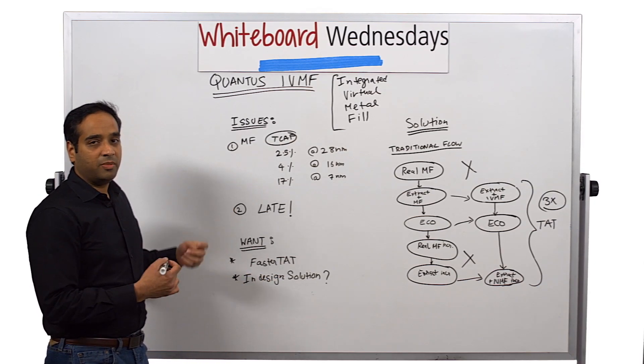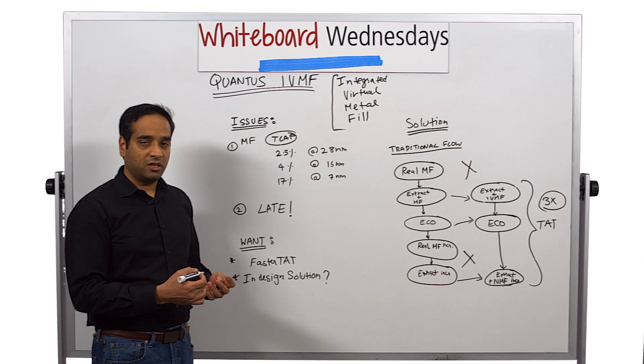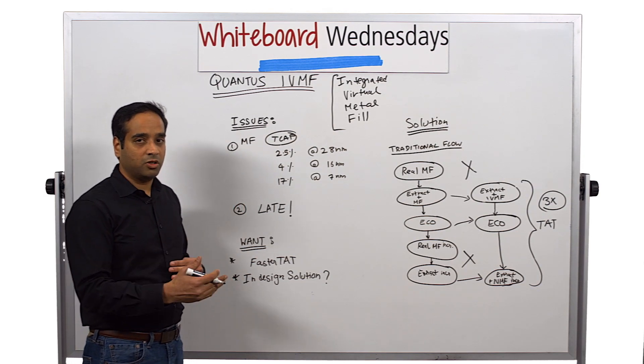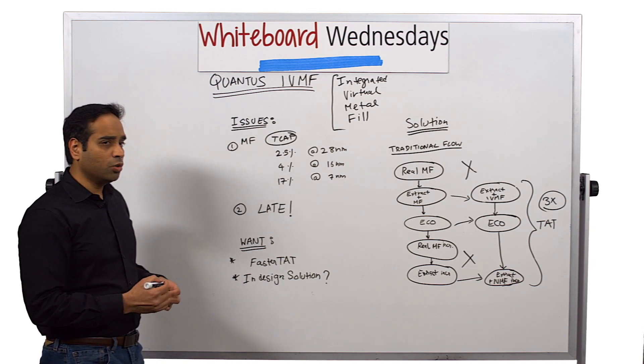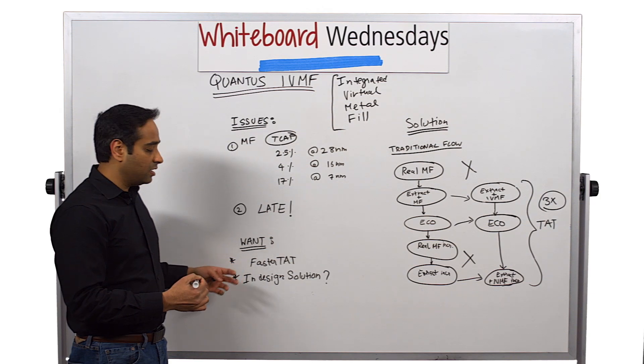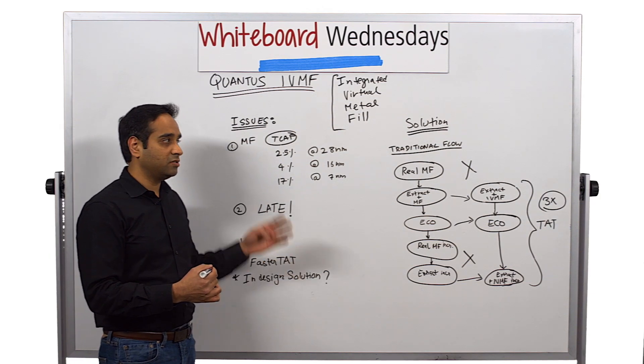Another issue is that the real metal fill comes late in the design cycle, which is bad for designers. They want to be as early as possible in their estimations. So what do customers want? A faster TAT and an in-design solution that addresses these issues.